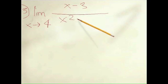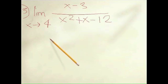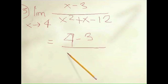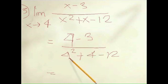Well, like we did before, simply replace the value of x with the limit over here, which is 4 minus 3 over 4 squared plus 4 minus 12, and when you put that in your calculator you should get 1 over 8. Thanks for watching.